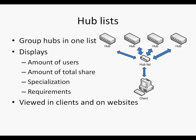A hub list is a way to group and view multiple hubs in a simple list, allowing you to pick a hub that suits your discussion topics and sharing needs. The list is mostly viewed through the client, but many hub lists offer a website alternative.